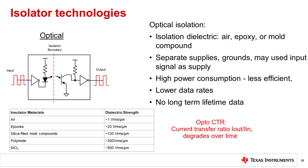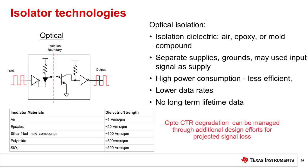The current transfer ratio, or CTR, parameter describes the behavior of output current to input current over time. For systems needing long lifetimes, one must either calibrate the system to account for the CTR, or over-design the system to ensure that the light intensity is strong enough for the required operating lifetime.